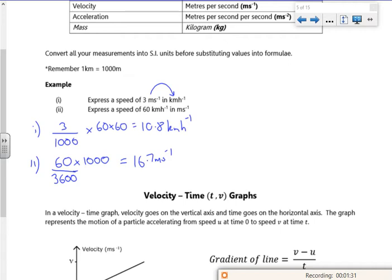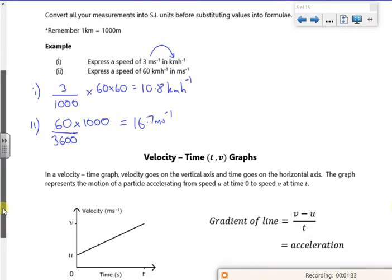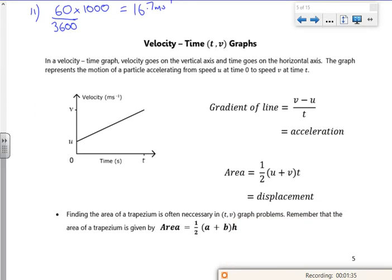And your calc will do it but you'll probably faff around more using trying to find it on your calc than actually doing it. So let's have a look at velocity time graphs then. So it says here that your velocity's on the vertical, time goes horizontal.